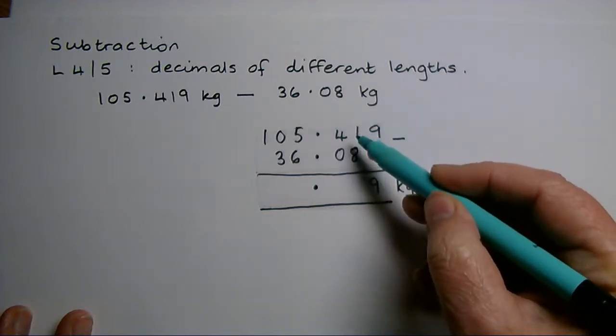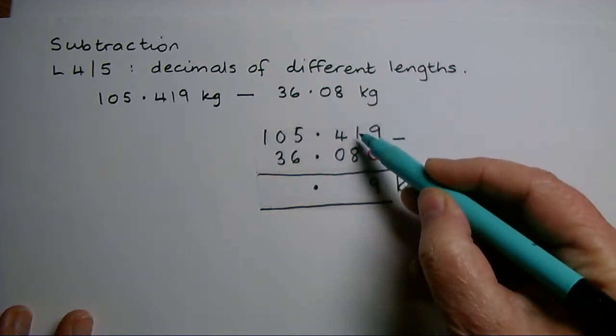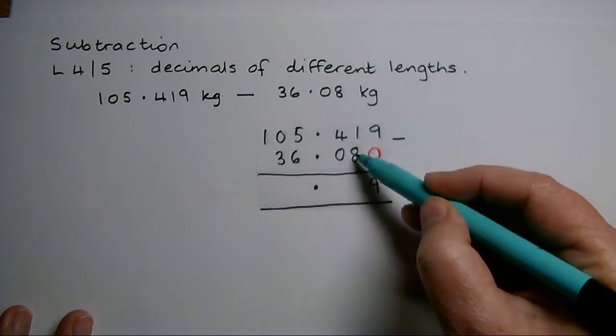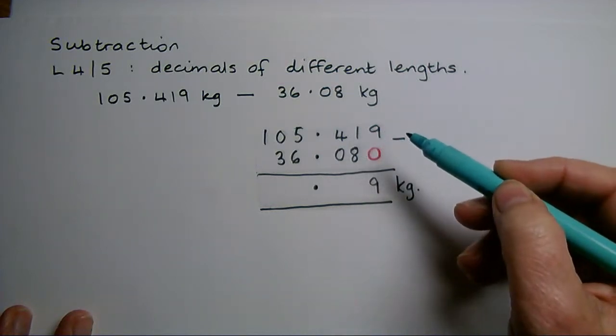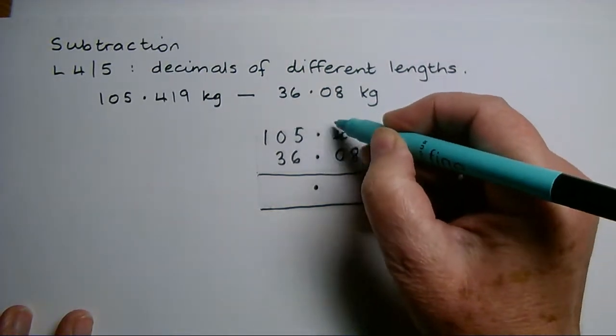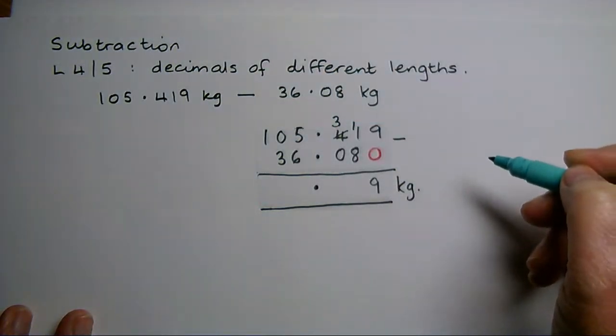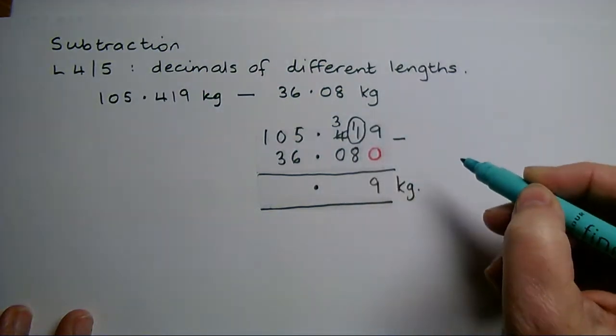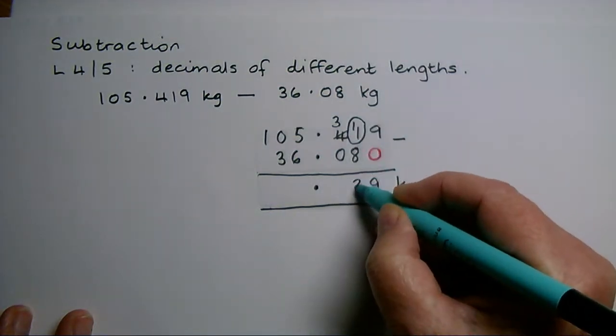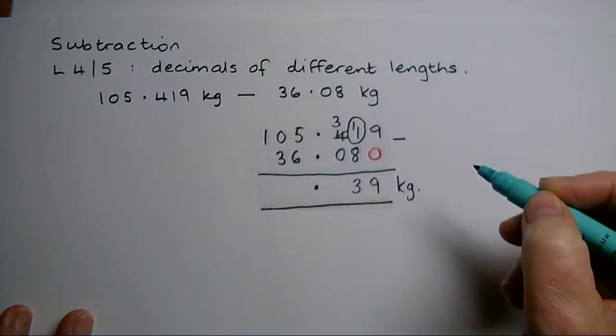In the next column, for hundredths of the amount, one take away eight, I can't do it. I'm going to have to borrow from here one of the tenths and turn it into ten hundredths. I've now got eleven hundredths take away eight, leaves three hundredths.